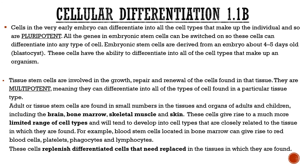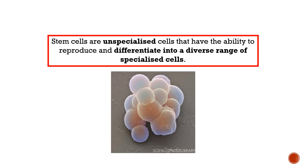The issue with adult stem cells is they need to be replaced if tissue is damaged. If you've lost your arm in an accident, you can't just regrow it — when the stem cells are gone, they're gone. The definition: stem cells are unspecialized cells that have the ability to reproduce and differentiate into a diverse range of specialized cells.